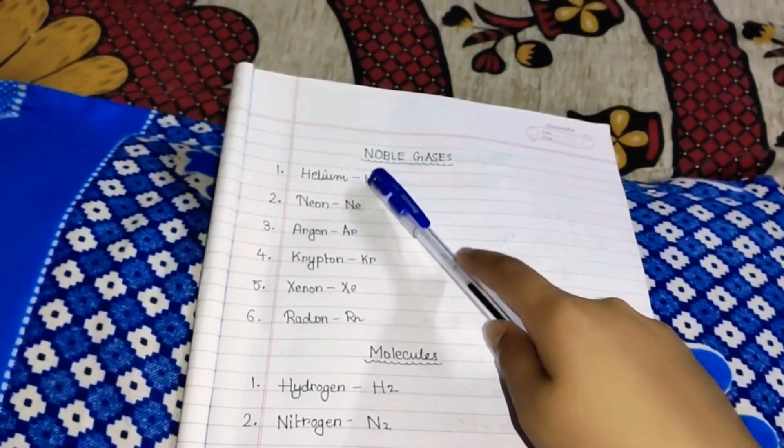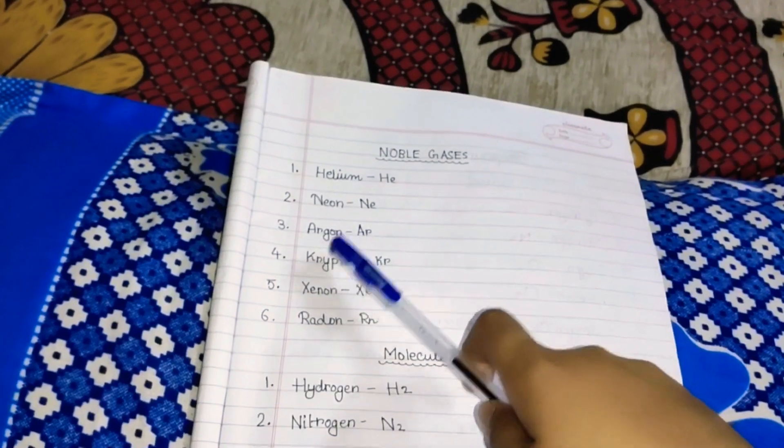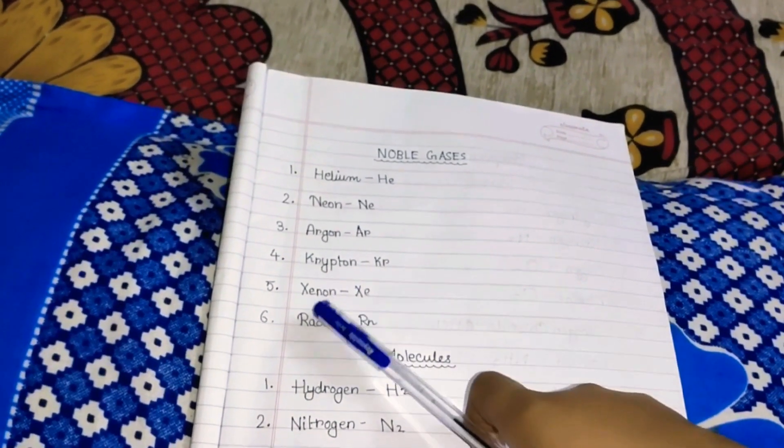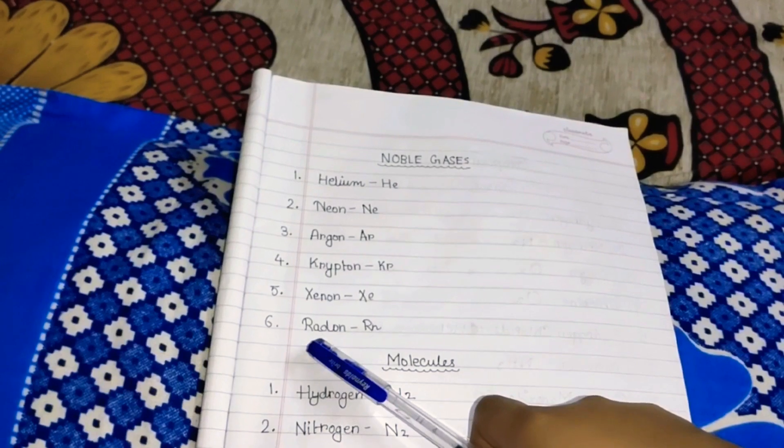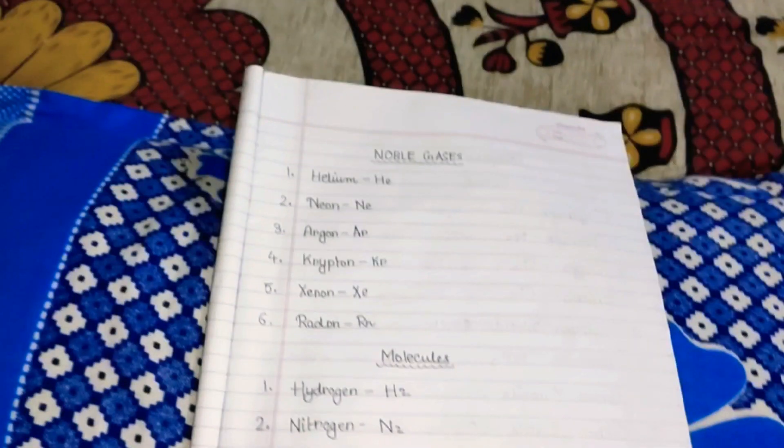Now we will learn about the noble gases. First is Helium, Helium stands for He. Second, Neon, Neon stands for Ne. Third, Argon, Argon stands for Ar. Krypton Kr, Xenon Xe, Radon Rn.